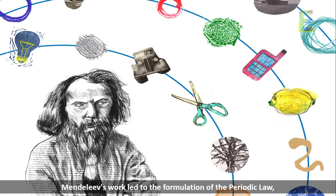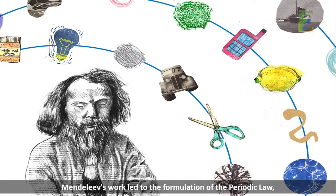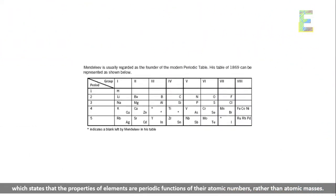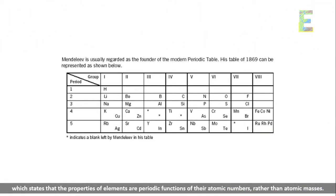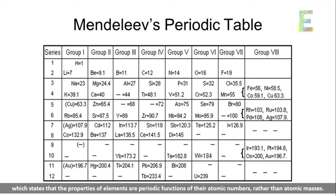The periodic law. Mendeleev's work led to the formulation of the periodic law, which states that the properties of elements are periodic functions of their atomic numbers, rather than atomic masses.